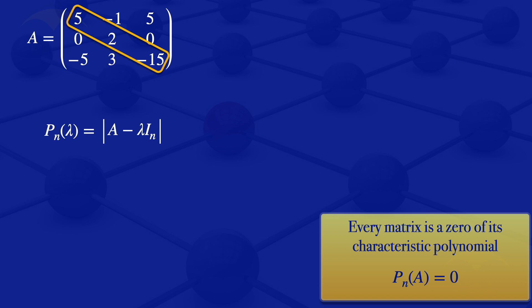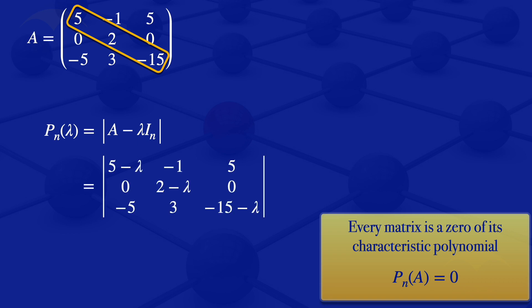So we have that our characteristic polynomial is the determinant of the matrix with elements: 5 minus lambda, minus 1, 5, 0, 2 minus lambda, 0, minus 5, 3, minus 15 minus lambda.